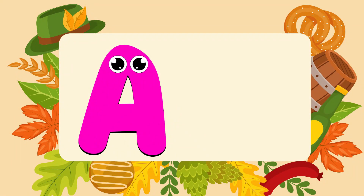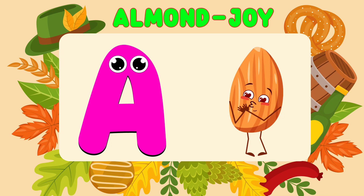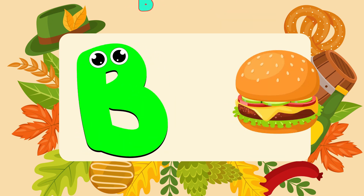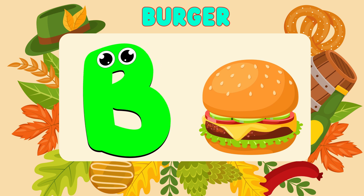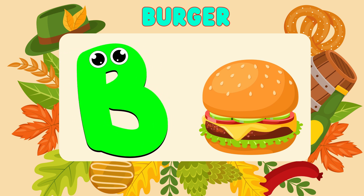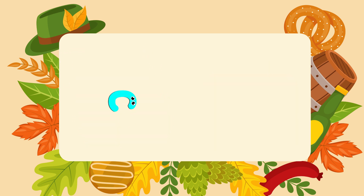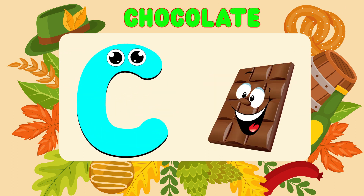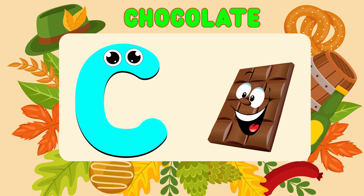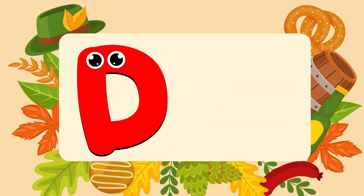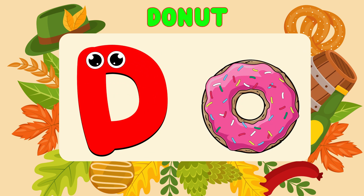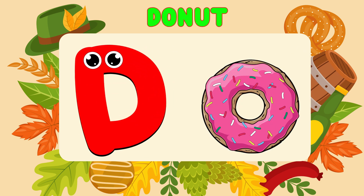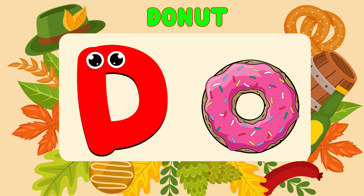A is for Almond Joy. A, A, Almond Joy. B is for Burger. B, B, Burger. C is for Chocolate. C, C, Chocolate. D is for Doughnuts. D, D, Doughnuts.